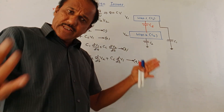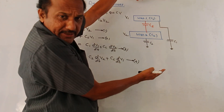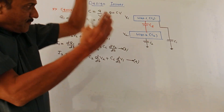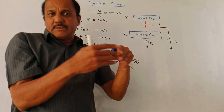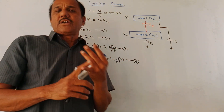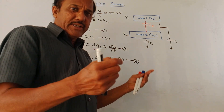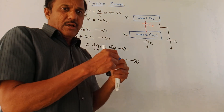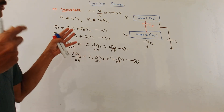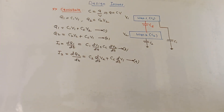To reduce the crosstalk effect, a simple technique is to increase the gap between the two wires, which reduces the effect of the coupling capacitor. Additionally, you may use some additional lines — VDD or ground lines — between or below the signal lines.